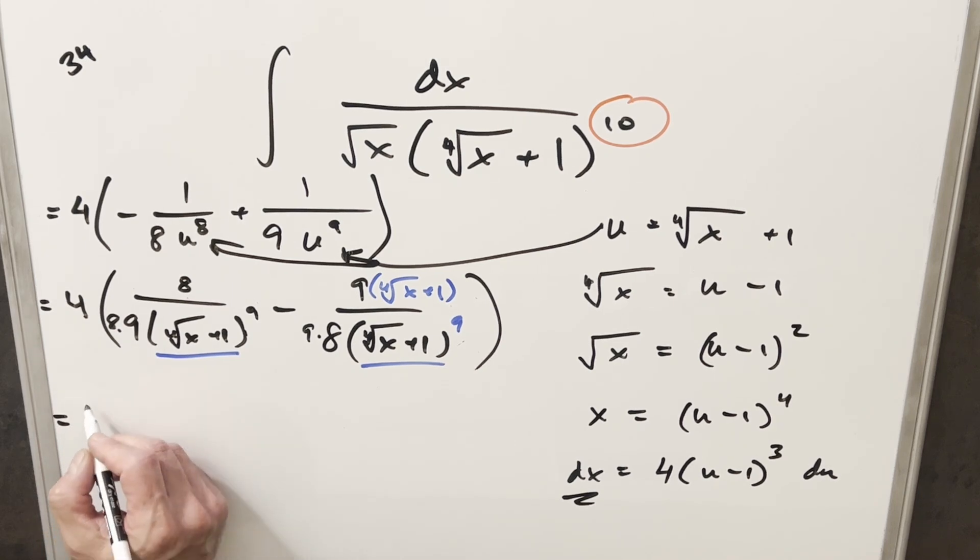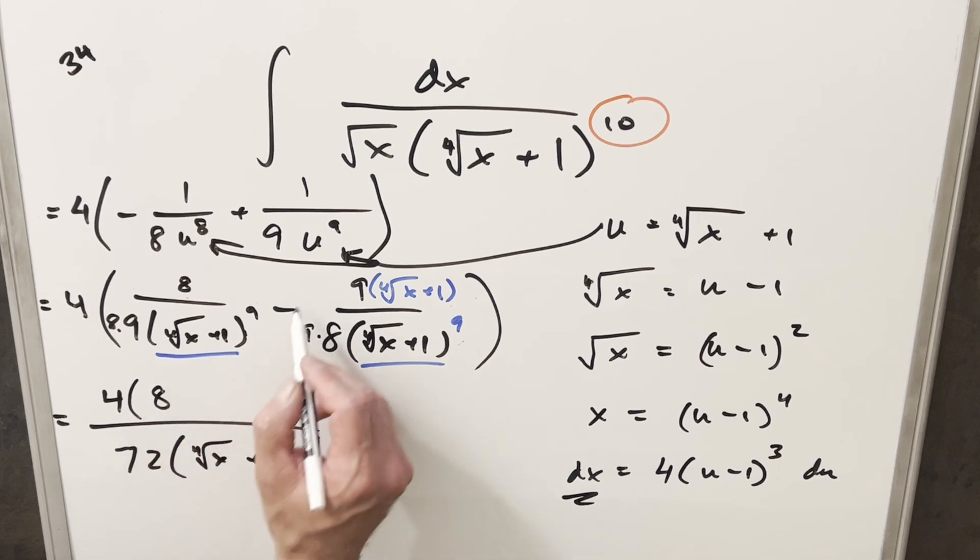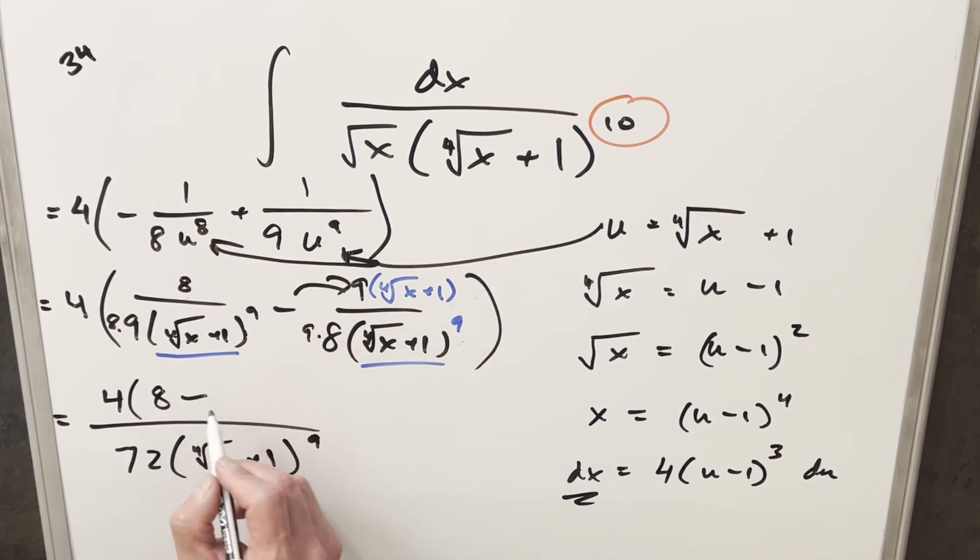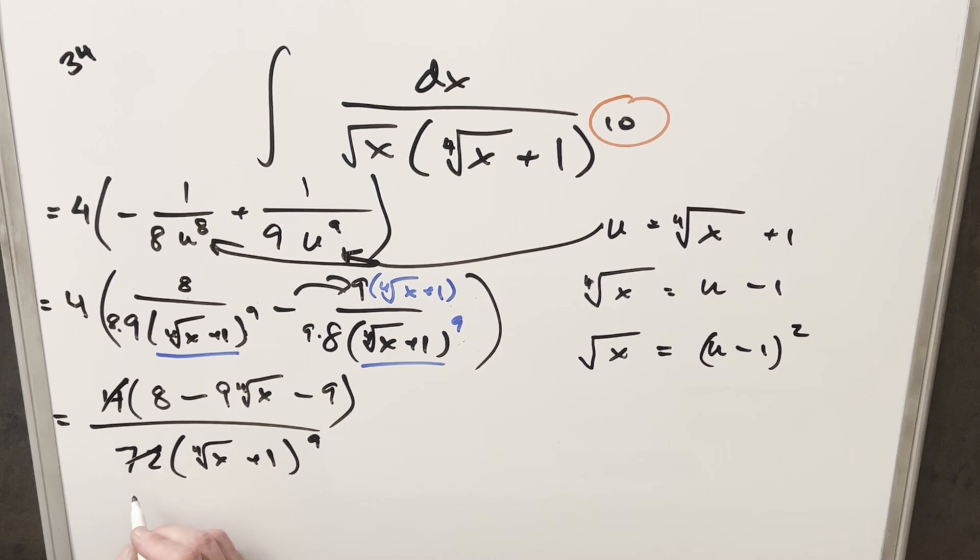Then now that we have a common denominator let's put this all together. So we'll still have this 4 out front. Our denominator is going to become 72 times this fourth root of x plus 1 all to the 9th. And then the numerator is going to become 8. Distributing in the minus sign we'll have 8 minus 9 times the fourth root of x. And then the last term is going to be a minus 9. So I can cancel 4 with 72 and this is going to give me an 18 here. And I'll let you factor a minus out front. So we'll change this to a plus, this to a plus, this to a minus.